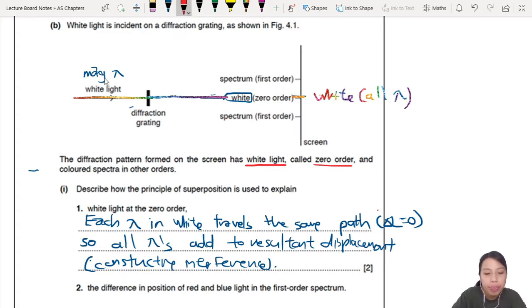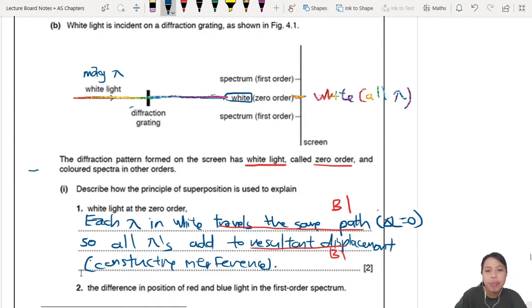This one is two marks. One comes from the idea that they all travel the same path at zero order. So they all add up together for resultant displacement. All the wavelengths and all their paths all add up together. Each wavelength, constructive. So they all add together.